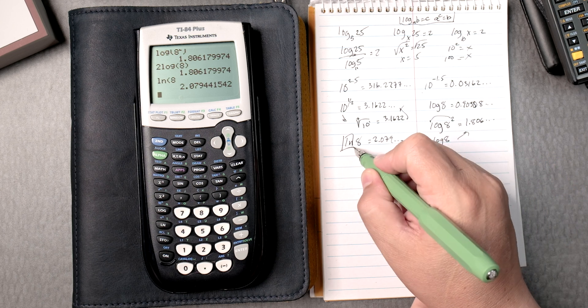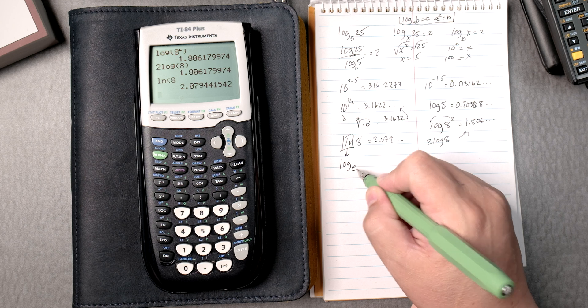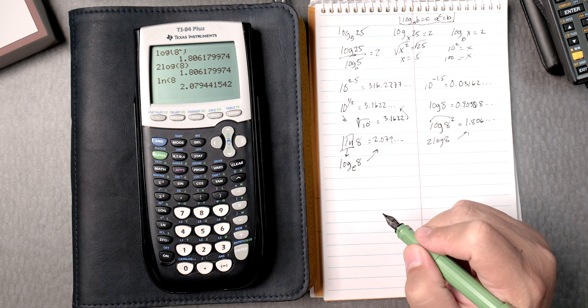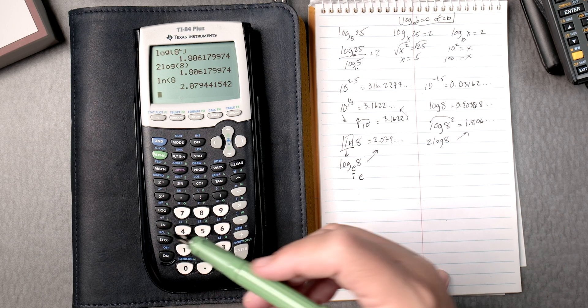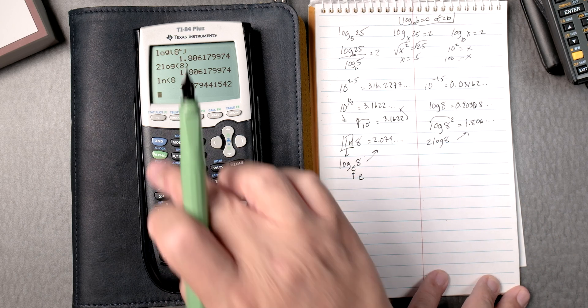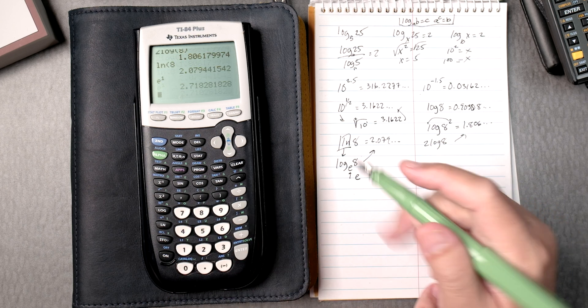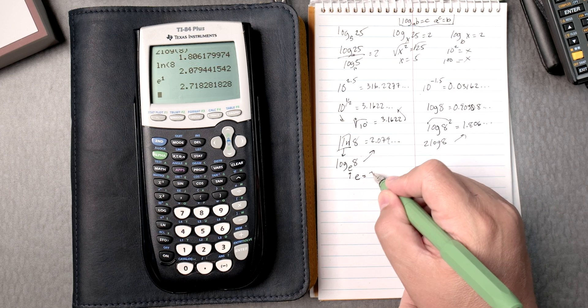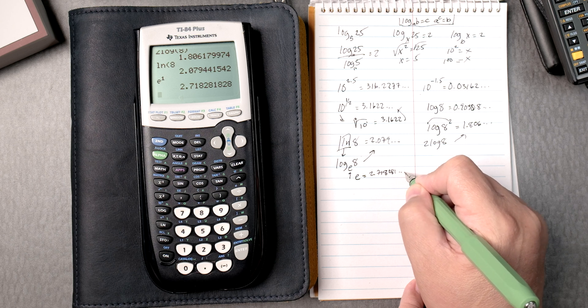By the way, this natural log is the log of base e of 8, which gives you the same answer. Now, e is over here, e to the x. If you say second, e to the x, and you put a 1, e is equal to 2.718281, and so forth.